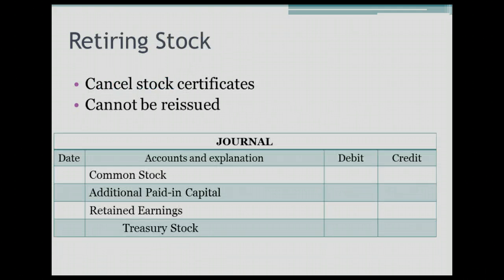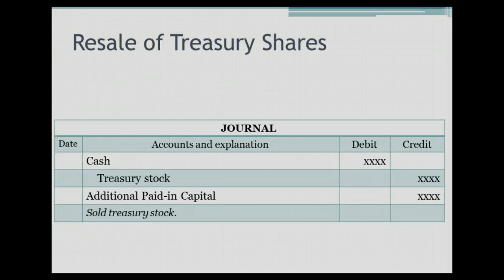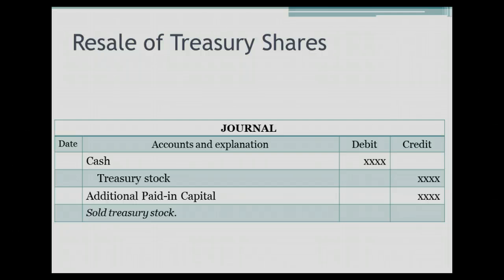Once a company purchases treasury stock, they can do several things. They can retire those shares, meaning they cancel the stock certificates — and cancelled stocks cannot be reissued. Or they can resell the treasury stock. When reselling, they debit cash, credit treasury stock, and credit additional paid-in capital for any amount above the cost paid to purchase the treasury stock.